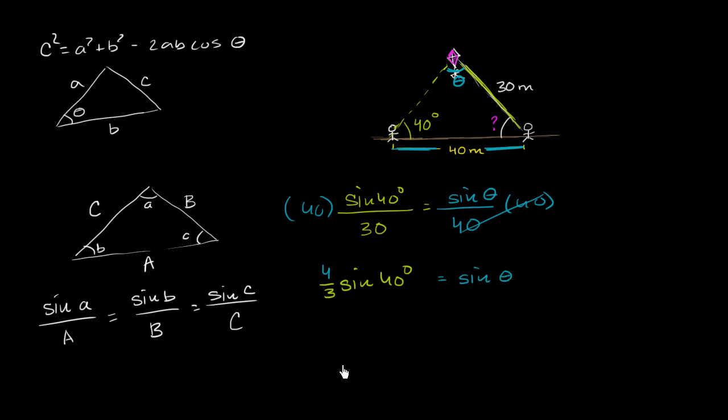And now to solve for theta, we just have to take the inverse sine of both sides. So inverse sine of 4 over 3 sine of 40 degrees is equal to theta. And that will give us this angle, and then we can use that information and this information to figure out the angle that we really care about.